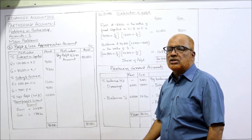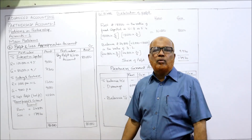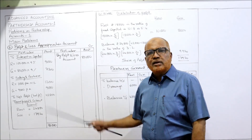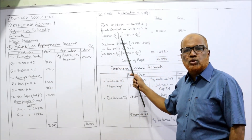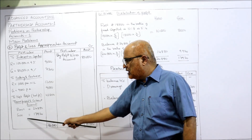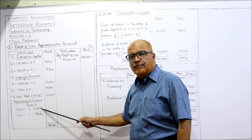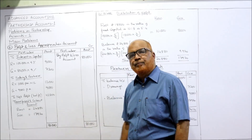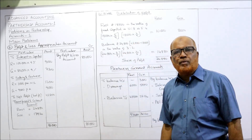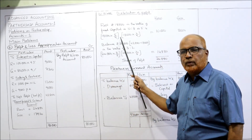So now: eighty thousand minus nine thousand minus seven thousand two hundred minus twelve thousand minus nine thousand gives a divisible profit of forty-two thousand eight hundred. This profit will be shared by both partners in the given ratio. In the working notes I have shown how much Ravi and Giri will get. Out of forty-two thousand eight hundred, twenty-four thousand eight hundred eighty is Ravi's share of profit and seventeen thousand nine hundred twenty is Giri's share.